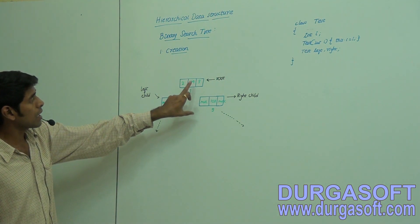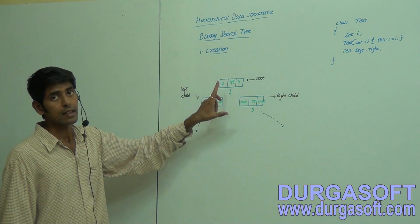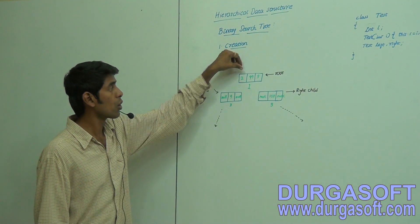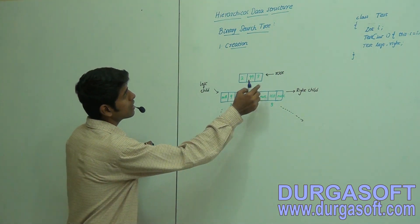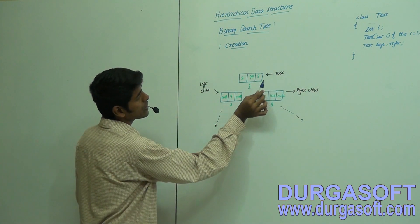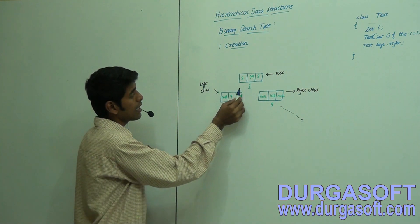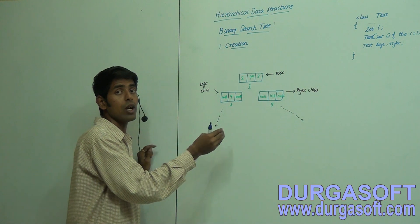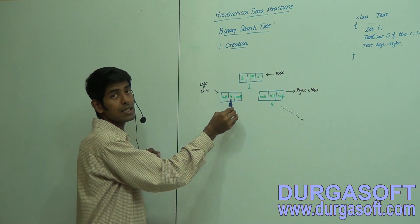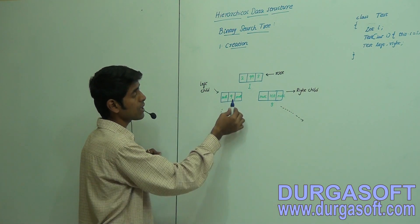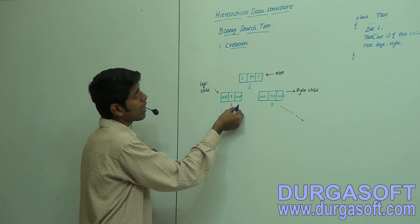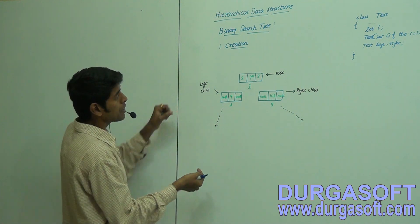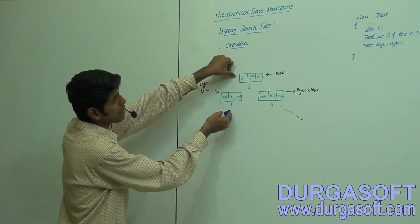If there is any root node, the left child must and should contain data which is less than the root node. Think that this is the root node containing some data — its left child must contain data less than the root node, and you should hold that node's address in its left field.